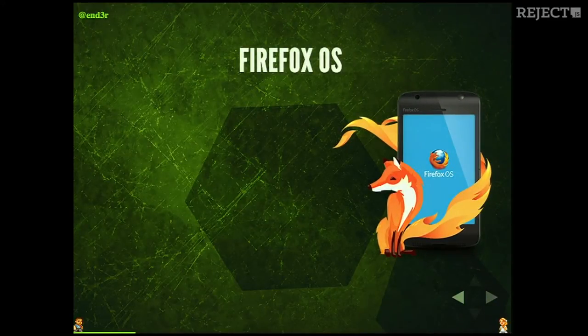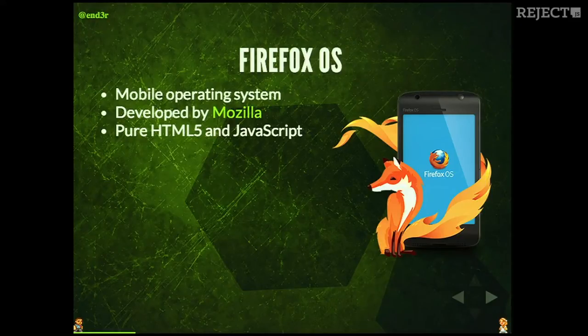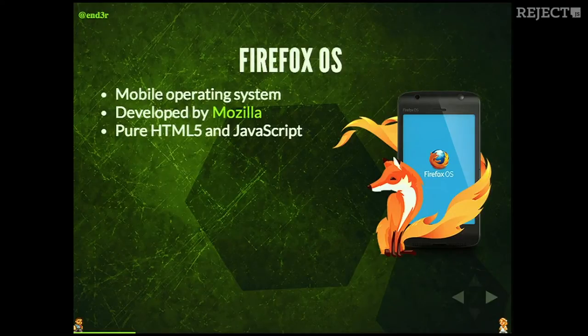A few words about Firefox OS. It's a mobile operating system developed by Mozilla. The thing that makes this system different from others is that it's built with HTML5 and JavaScript. For a front-end developer who worked for a couple of years in JavaScript, having a whole operating system on a mobile device that runs JavaScript is awesome. You can change one CSS style and the icons will be squares. It's very easy to customize and it's open sourced — it's on GitHub, you can check it and commit your changes.